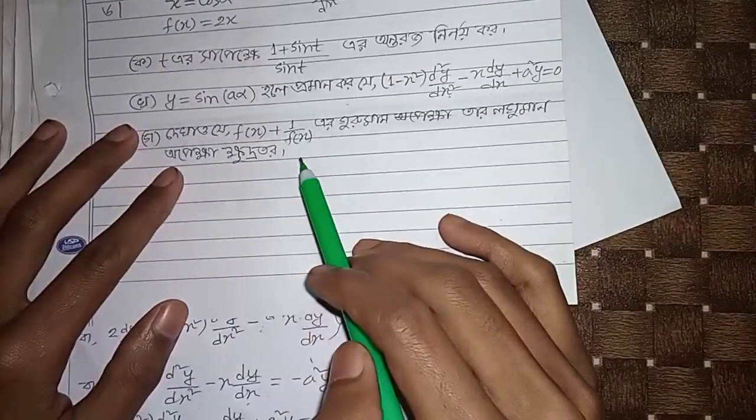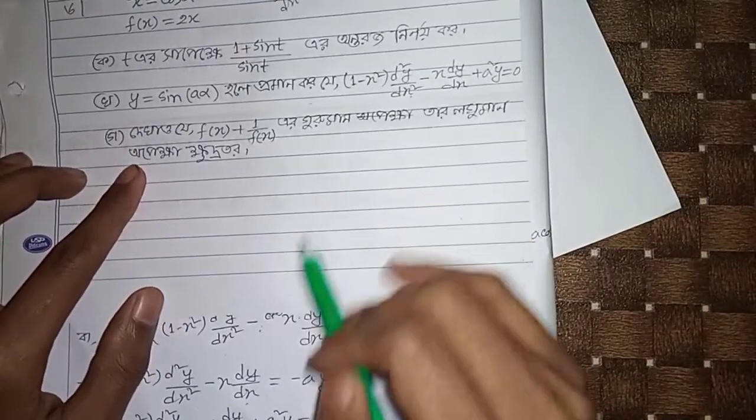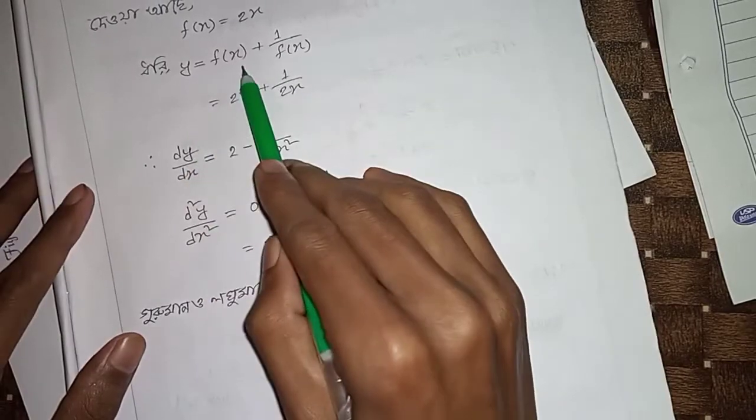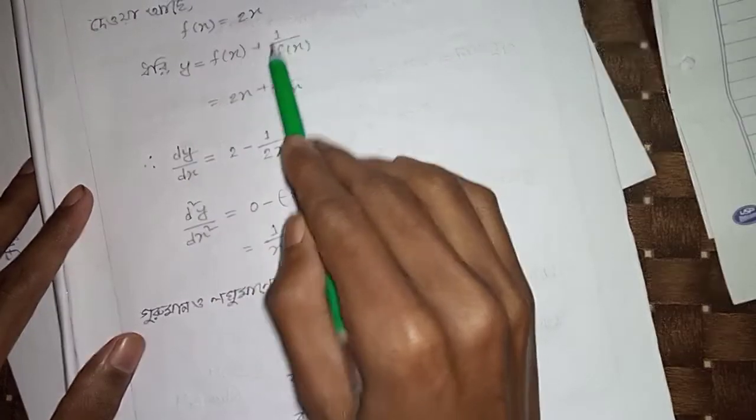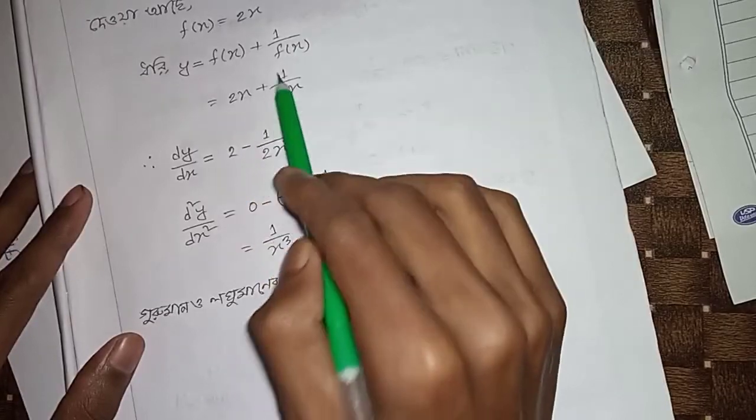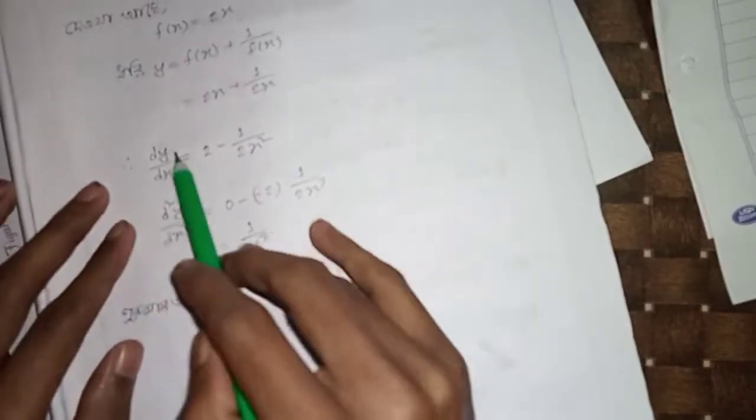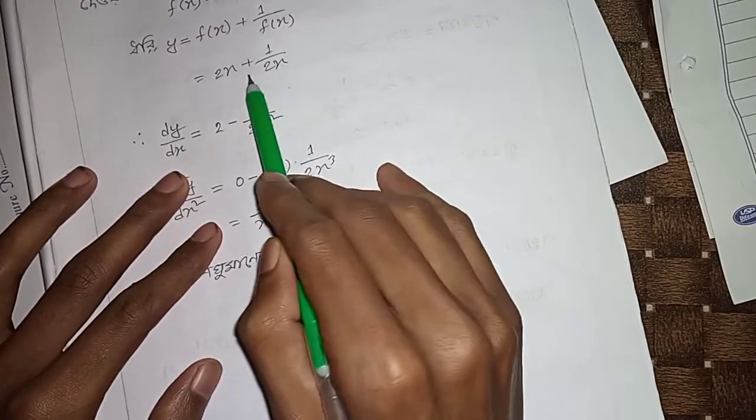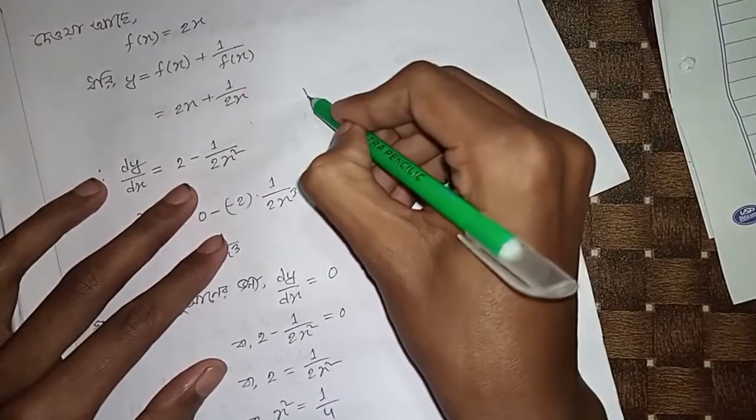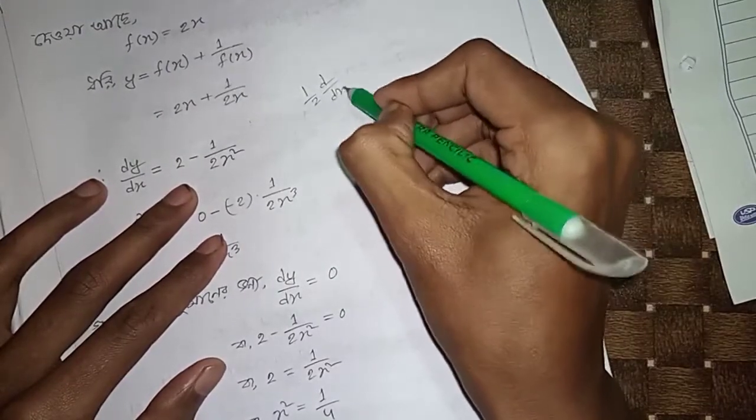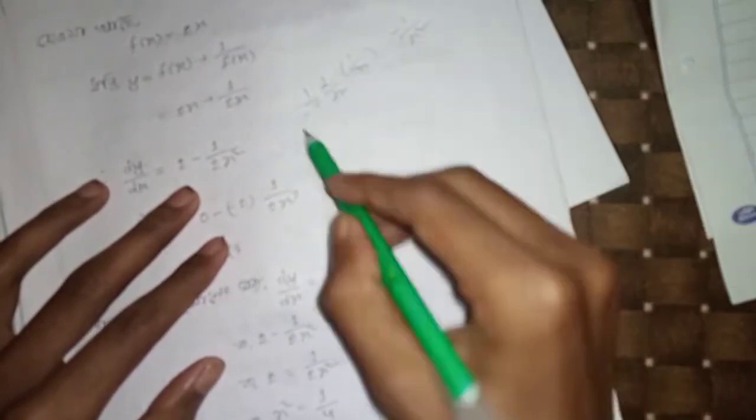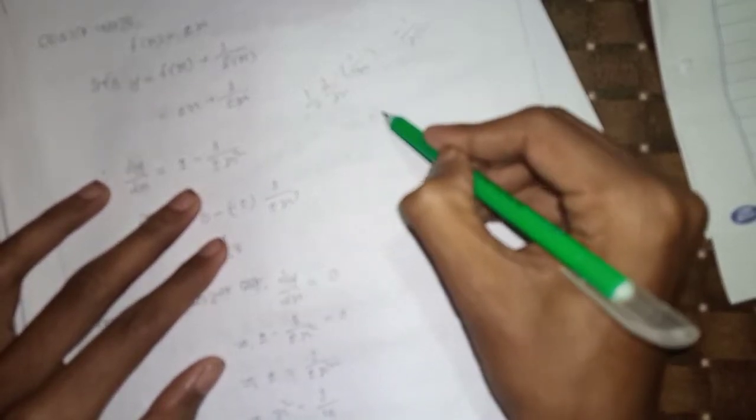For f(x) plus one by f(x), where f(x) equals 2x, y equals f(x) plus one by f(x) equals 2x plus 1/(2x). The derivative dy/dx equals two minus one by 2x² equals 1/(2x) minus 1/x².